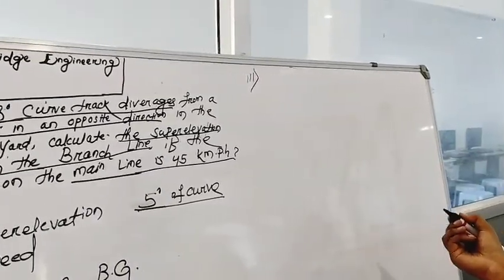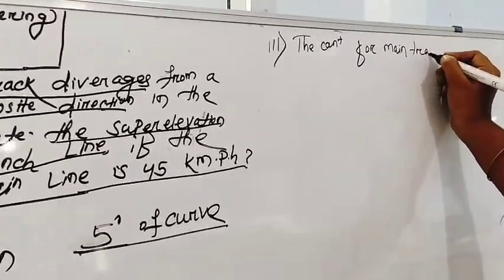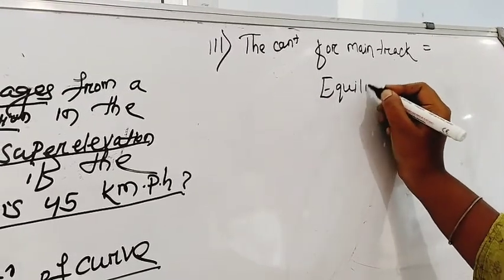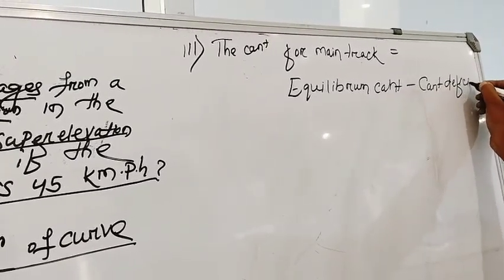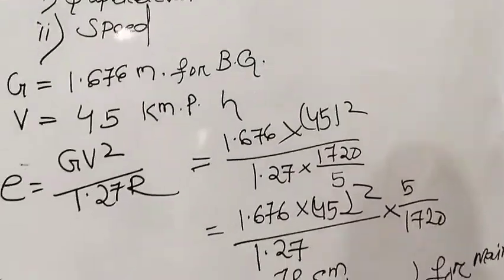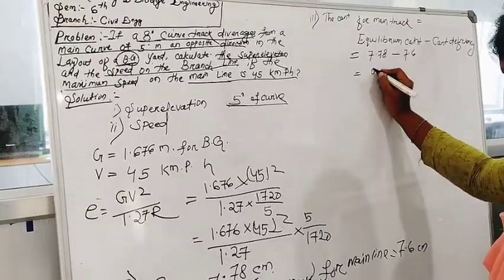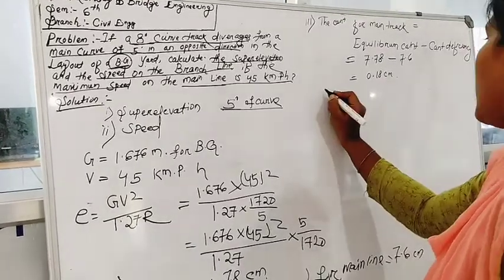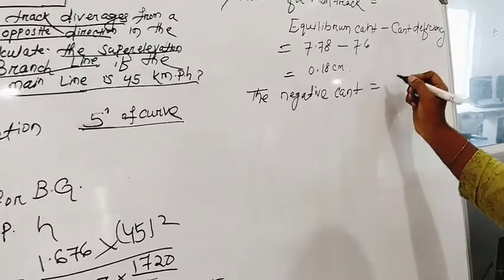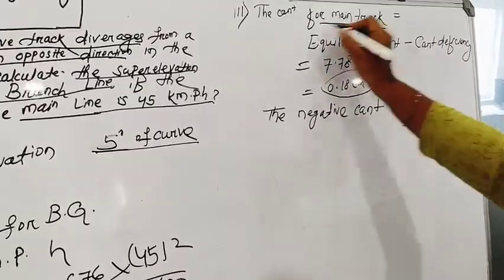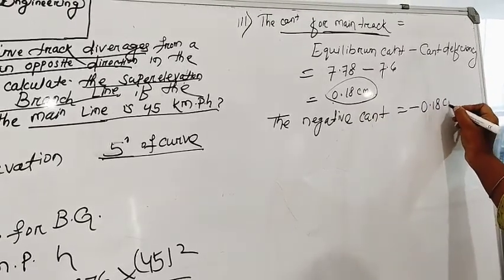We calculate the cant for the main track. The formula is: cant for main track = equilibrium cant minus cant deficiency. Equilibrium cant is 7.78 cm, cant deficiency is 7.6 cm, so the cant for main track = 7.78 − 7.6 = 0.18 cm. Since the main track cant is positive, the negative cant has the same value with sign change: −0.18 cm.